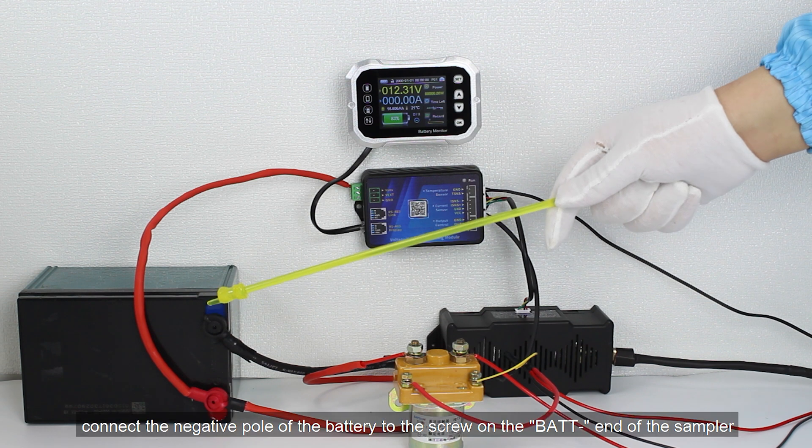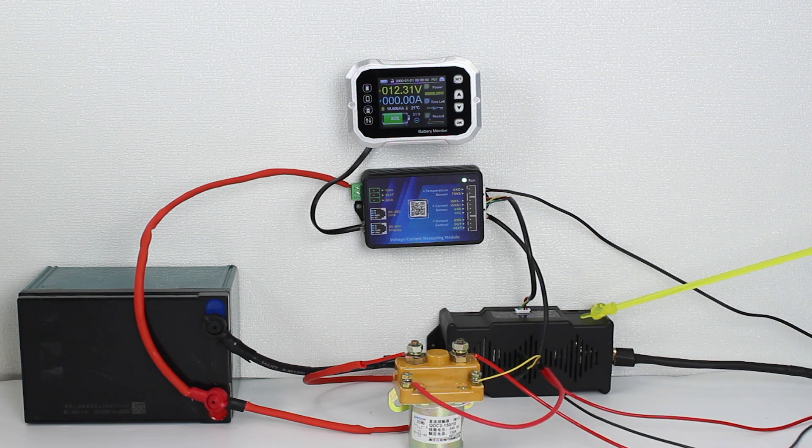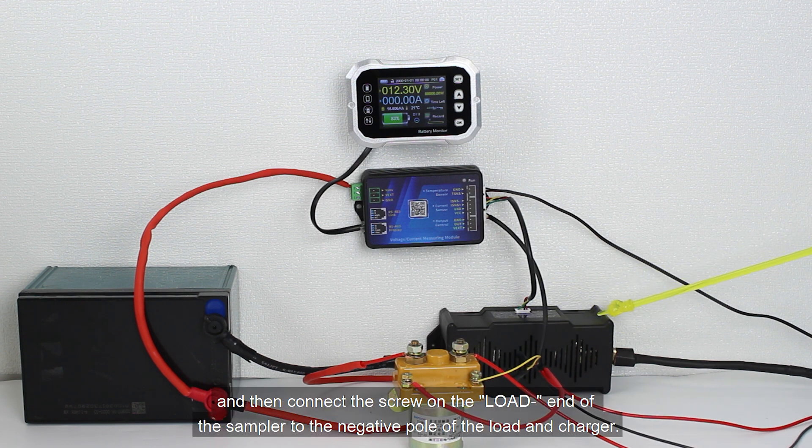First, connect the negative pole of the battery to the screw on the bat end of the sampler. And then connect the screw on the load end of the sampler to the negative pole of the load and charger.